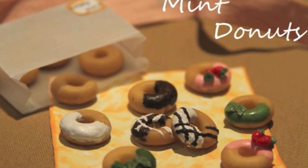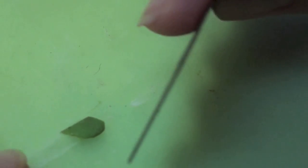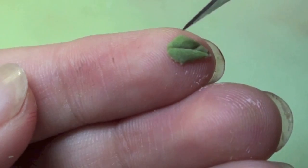Start off by making the mint leaves. Cut it into a kite shape. Texture the leaf.